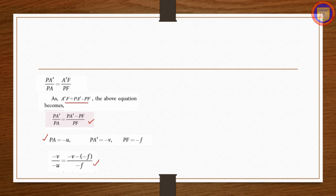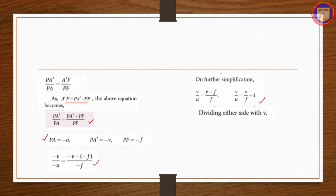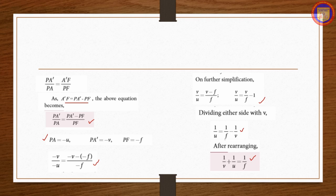Further simplifying: v/u = v/f − 1. Dividing both sides by v gives 1/u = 1/f − 1/v. Rearranging, 1/v + 1/u = 1/f. This is the mirror equation.